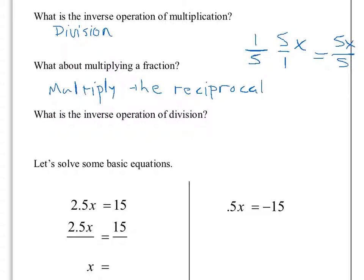What is the inverse of division? Multiplication. The explanation for this as a multiplicative inverse is pretty much the opposite of the previous statement. So we have a division — x over 5. I can break that division out: this is equal to 1 over 5 times x over 1.